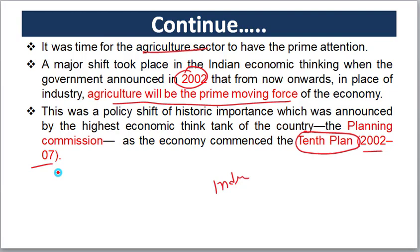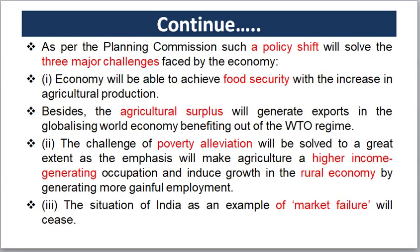So why did this policy shift happen? The Planning Commission identified three major challenges facing the Indian economy. These became the reasons for elevating agriculture to the role of prime moving force. The three major challenges are food security, poverty alleviation, and unemployment.